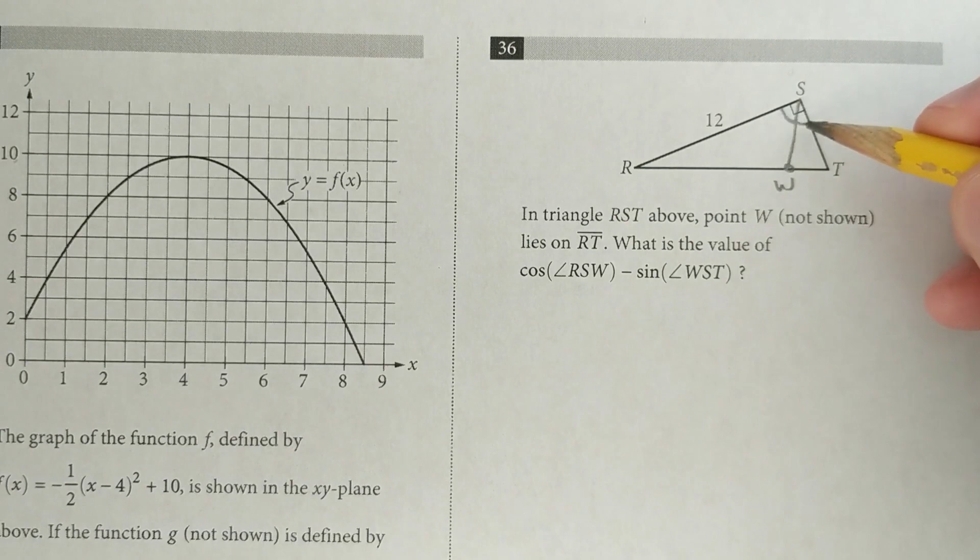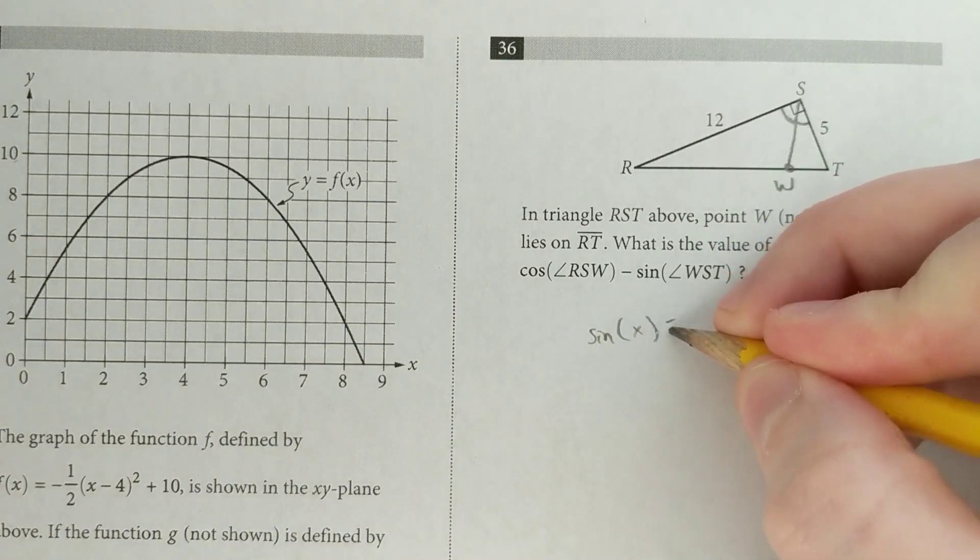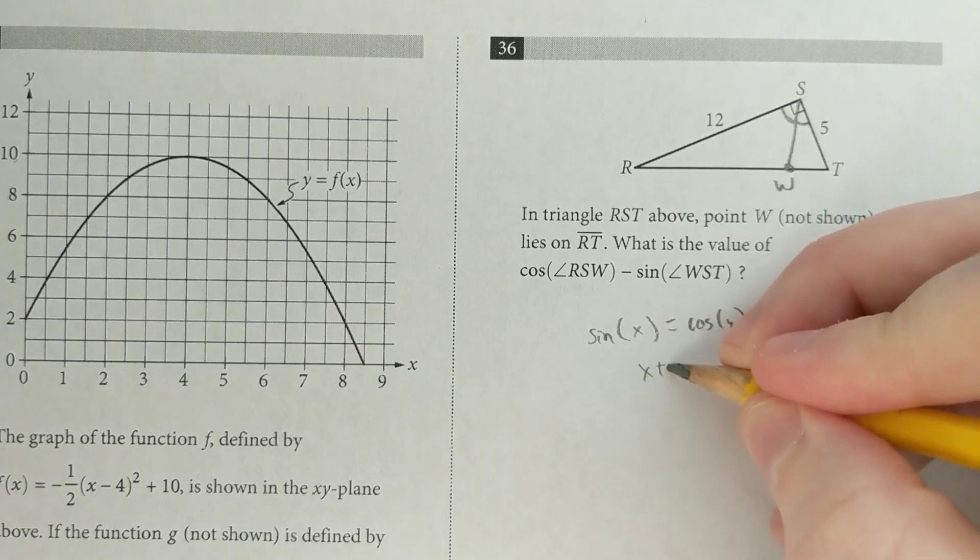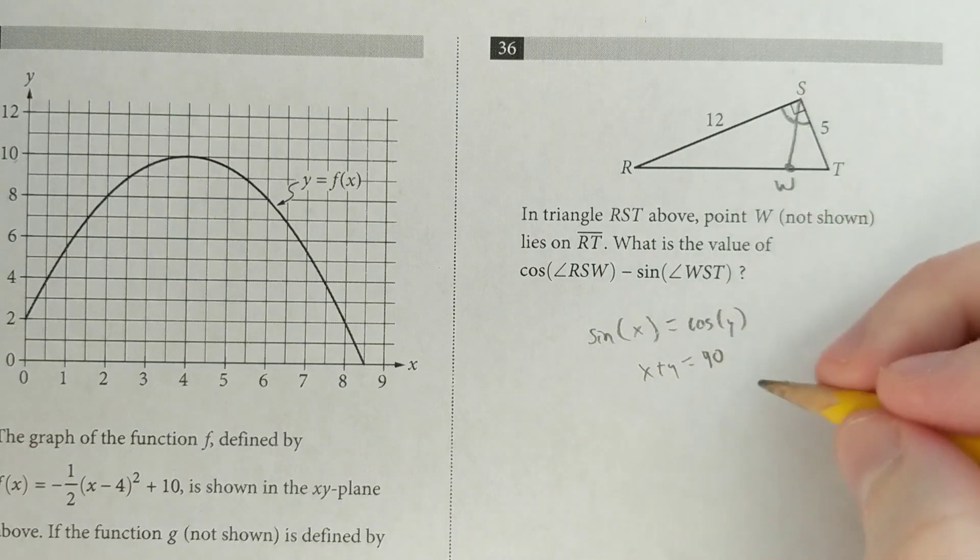Well, now when you look at it, you can see that these two angles add up to 90. And we know that the sine of one angle is going to equal the cosine of the other angle when those two angles add up to 90. So if you were to subtract those two things, you'd just get 0 because they're equal to each other.